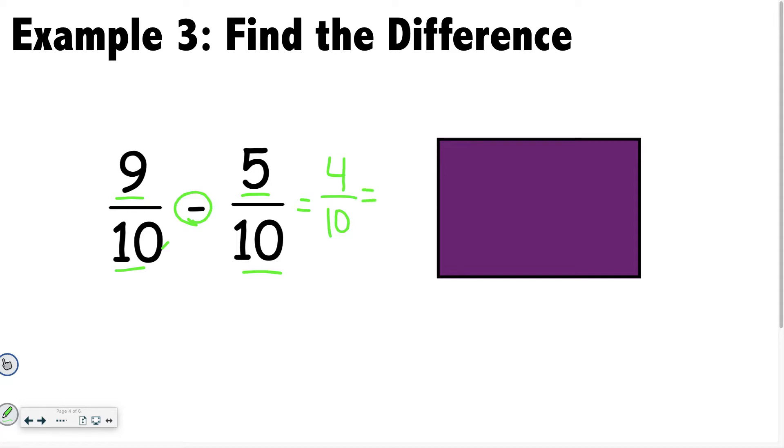Getting back to the 4 over 10, if you reduce that, they're both divisible by 2 and it would become 2 over 5.